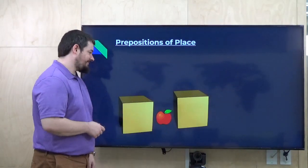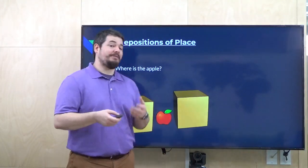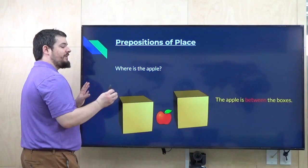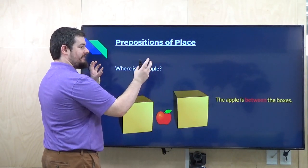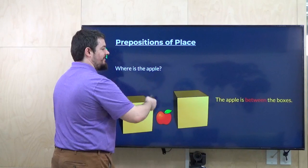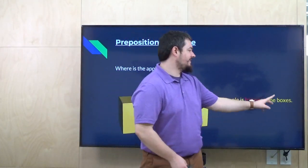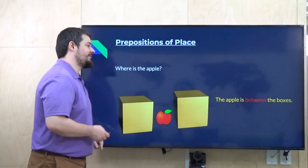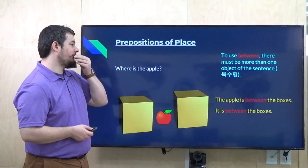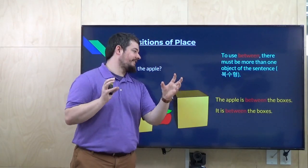Here we have an apple and two boxes. If I were to say, where is the apple? You would say, the apple is between the boxes. Between means two things — there must be more than one object. In this case, two boxes. And something is inside. So, the apple is between the boxes.